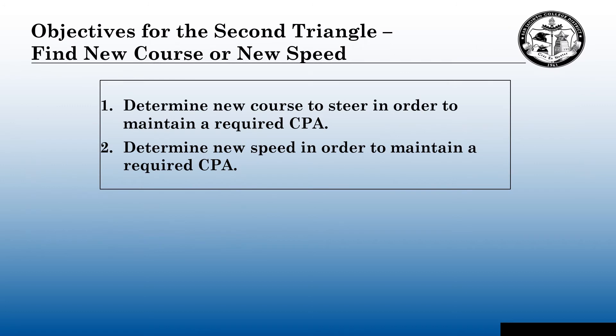The objectives for the second triangle: to find a new course or speed. At the end of this presentation, you will be able to, one, determine a new course to steer in order to maintain a required CPA. Two, you'll be able to determine a new speed in order to maintain a required CPA.